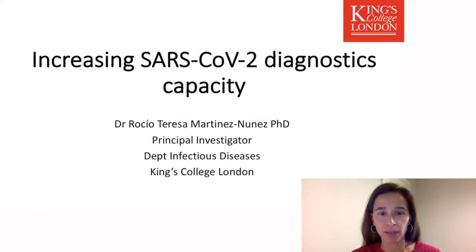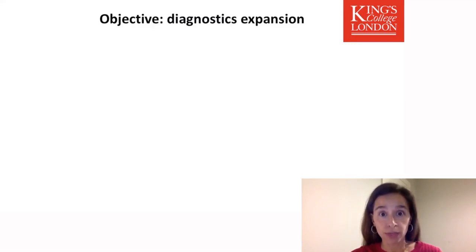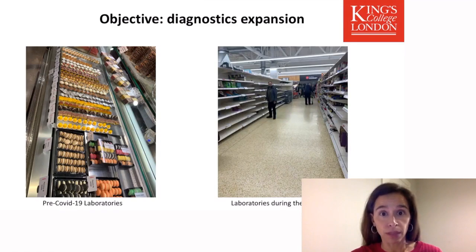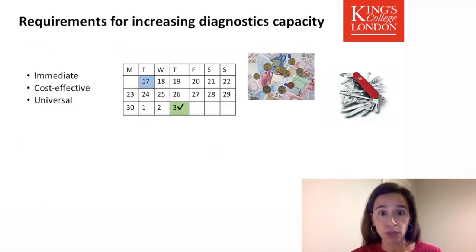My name is Rocío Martinez-Núñez, and I'm a principal investigator in the Department of Infectious Diseases at King's College London. What I'm going to present is part of the work I've been doing to increase diagnostics capacity in the UK and Spain. Our objective was to increase diagnostics. Our labs before the pandemic had plenty of reagents and equipment. However, during the pandemic, like what happened in supermarkets, we did not have enough reagents, not enough equipment, and it was impossible to cope with the demand for tests. We needed a solution that was fast and allowed us to increase diagnostics capacity.